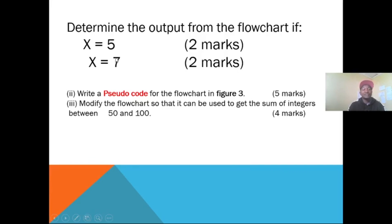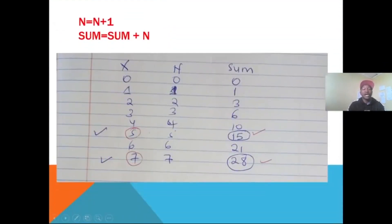We'll be going through how to interpret and fix these values to get the output — that part carries four marks. We'll also go through how to write the pseudocode for five marks, and how to modify the flowchart to get the sum of 50 to 100. Our main point of interest is determining the output, which is why I have made it bold.